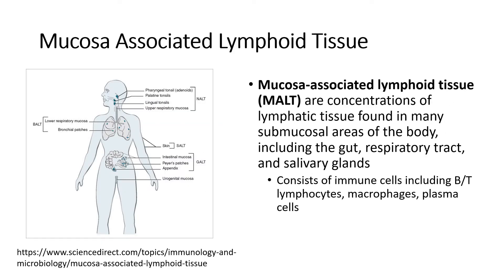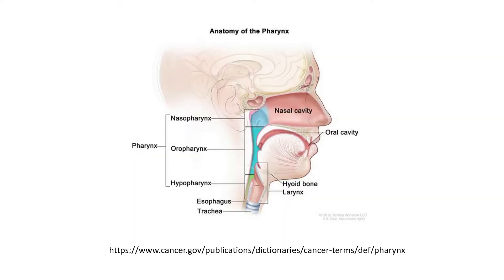Mucosa-associated lymphoid tissue, or MALT, are concentrations of lymphatic tissue found in many submucosal parts of the body, including the gut, respiratory tract, and salivary glands. They contain many immune cells including B and T lymphocytes, macrophages, and plasma cells.